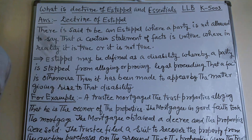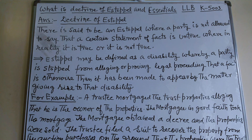My dear friends, now I am taking the first question of fifth semester third paper, that is K5003. This is the third paper of the fifth semester. The question is: what is the doctrine of Estoppel and its essentials? This is a very important question — what is the definition of Estoppel and what are its essentials?